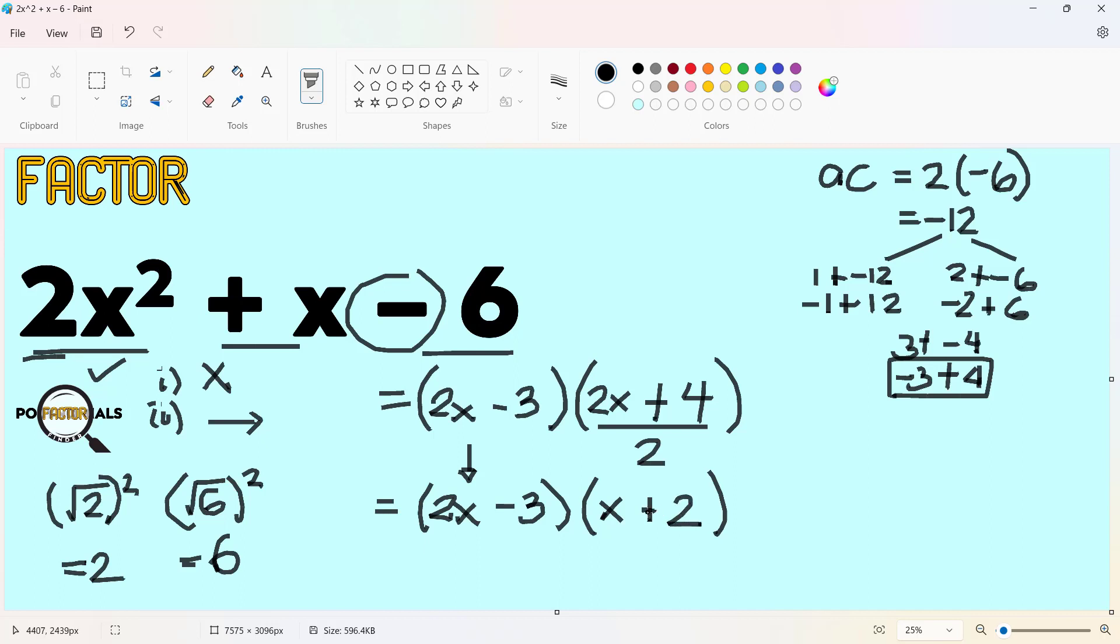So when you check this using your FOIL method, first 2x times x, 2x squared. Inner, negative 3 times x is minus 3x. Outer, 2x times 2 is 4x. So minus 3x plus 4x. So you have 1x or simply x.